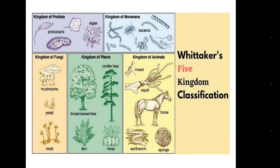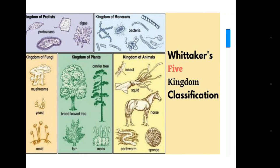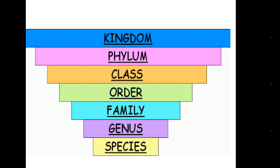Today we will discuss the classification of Kingdom Animalia. We classify living organisms into seven steps, each called a rank of the classification system. The first is Kingdom, second is Phylum, third is Class, fourth is Order, fifth is Family, then Genus, then Species.